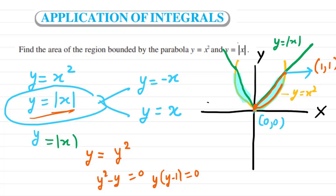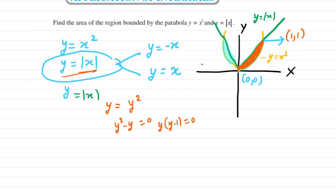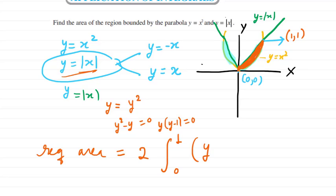To find the area of this region, whenever you have two curves, the required area will be twice the area in the first quadrant. The limits will be from 0 to 1, and we write upper curve minus lower curve — the upper curve y comes from the line and we subtract the y from the parabola dx.